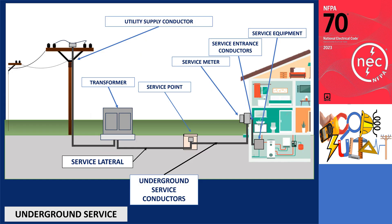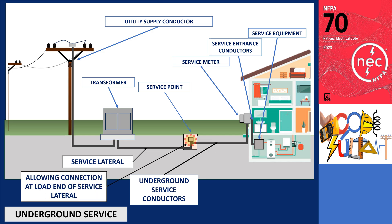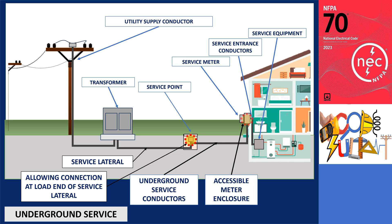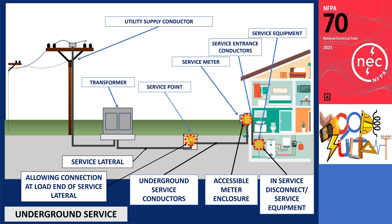In the case of an underground service, the grounding electrode conductor connection should be established starting from the load end of the service lateral or underground service conductors. Similarly to overhead services, the connection can also be made at the meter enclosure and service equipment.